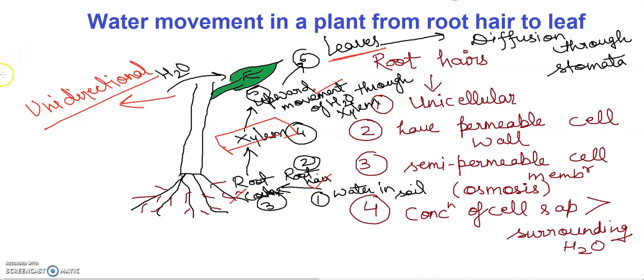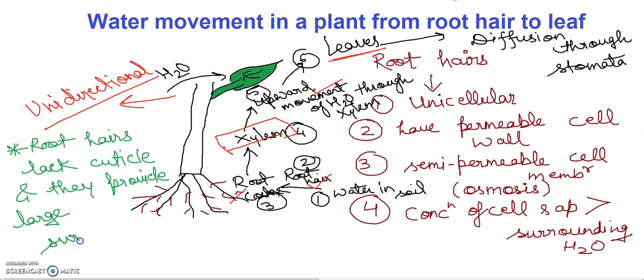Some more points I want to tell you here. All the root hairs lack cuticle. You can write this point here: root hairs, they lack cuticle. And cuticle, if this question is coming in your mind, cuticle is a type of waxy deposition which is found in plants. Root hairs don't have cuticle. They provide large surface area, which is in direct contact with water present between soil particles.